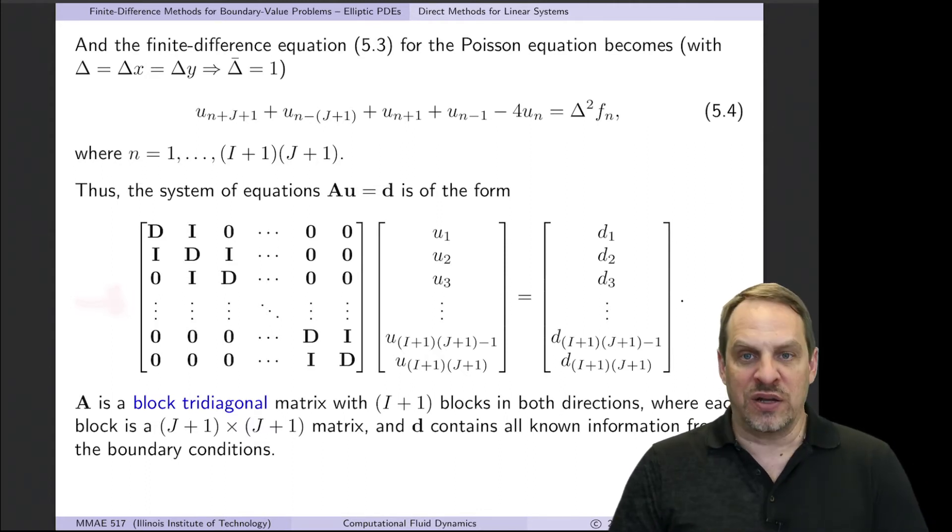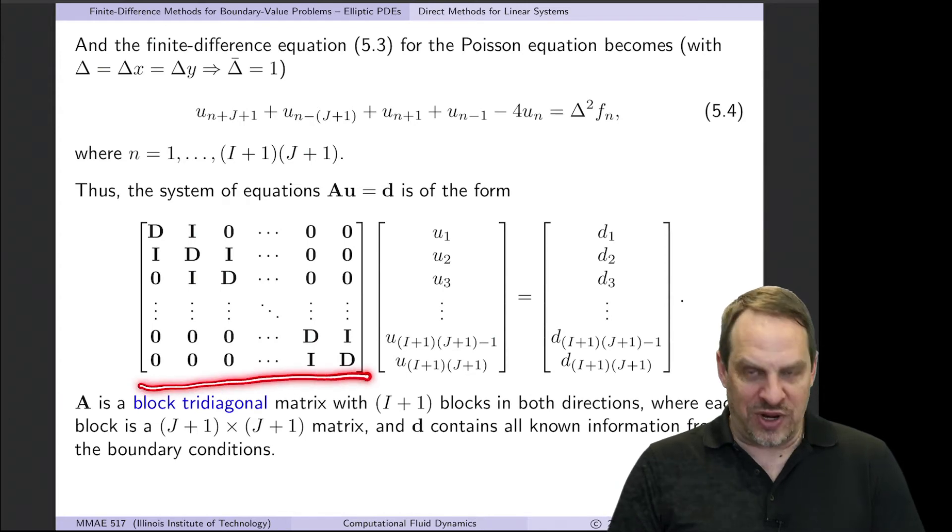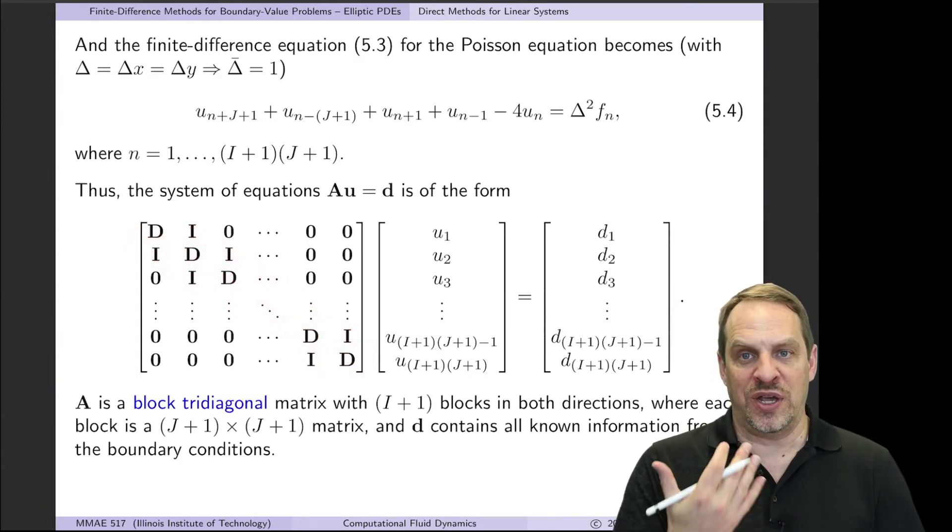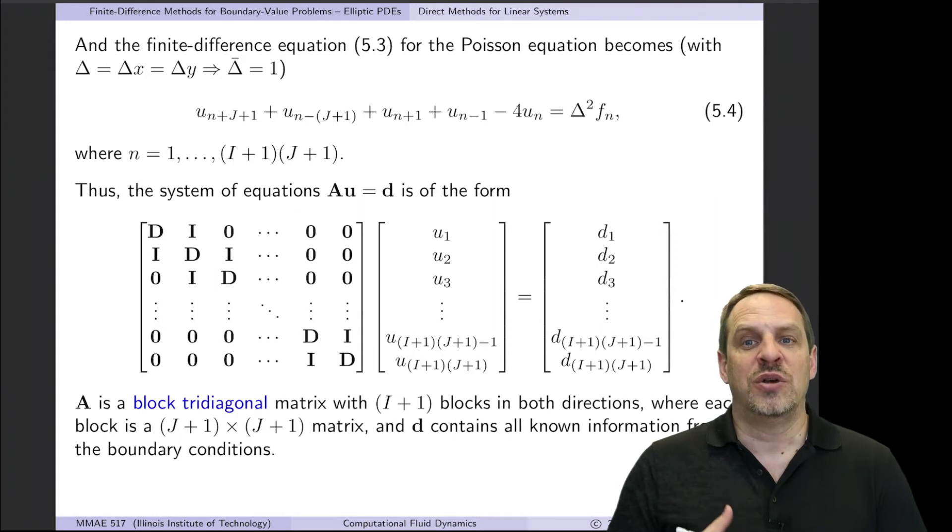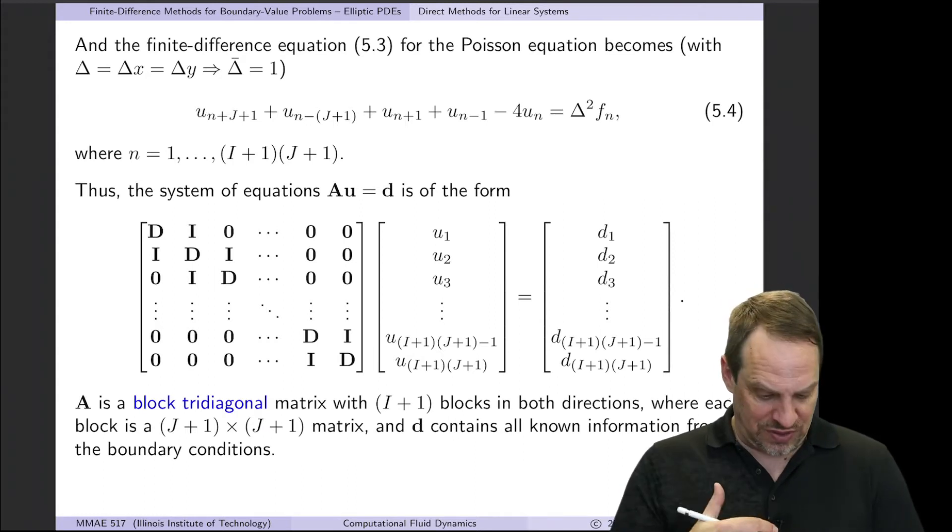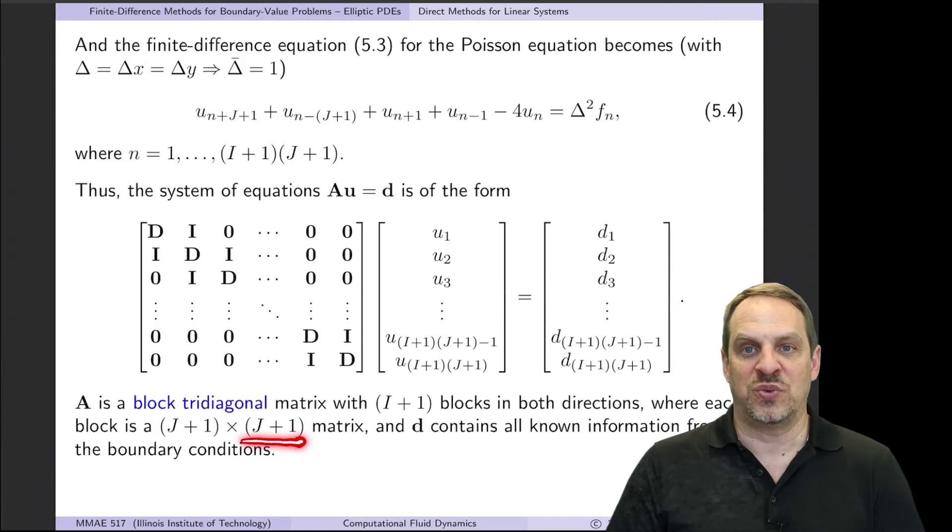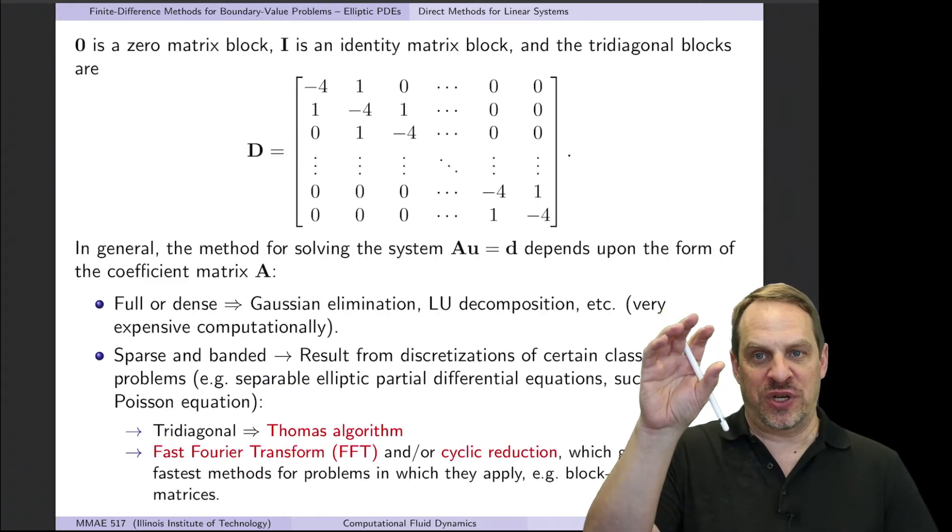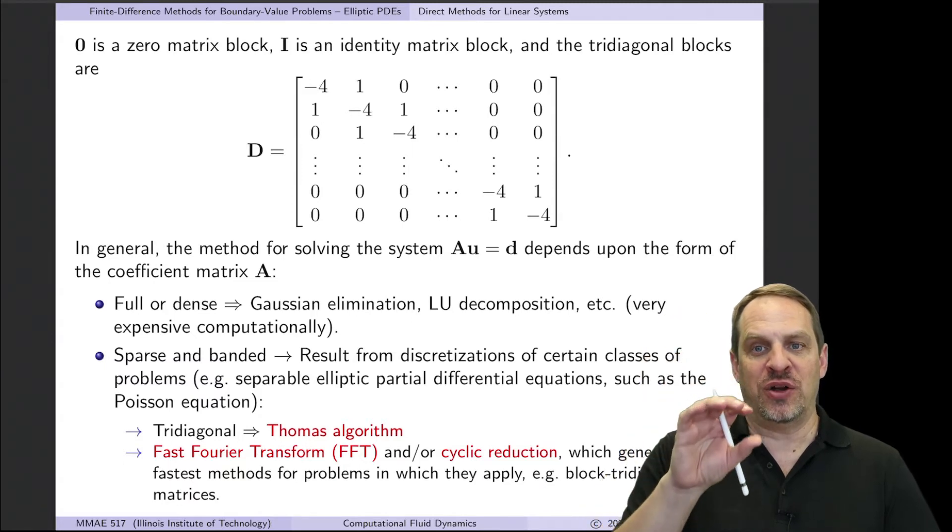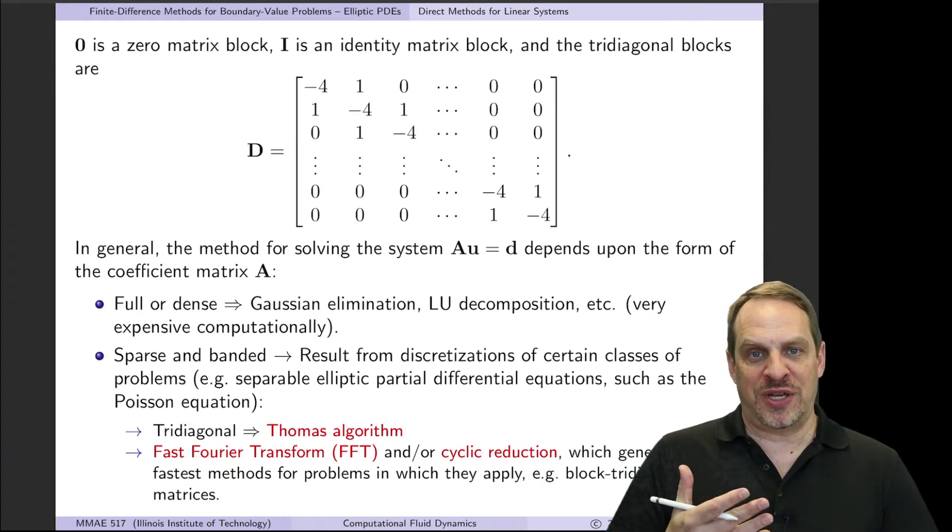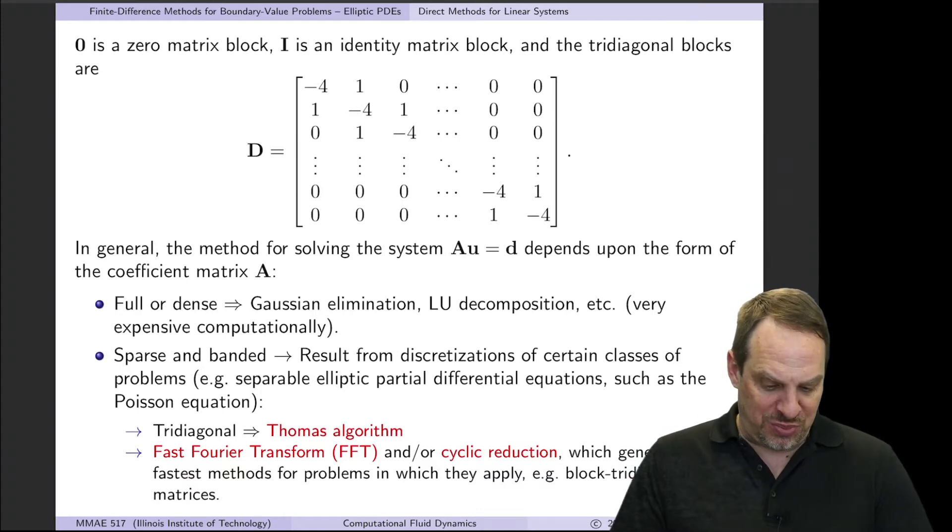These D blocks that go down the main diagonal of the block matrix have zeros here and here, and they're tridiagonal along the upper, main, and lower diagonals. Then the I's, the identity matrices, those pick up these coefficients, the 1 coefficients for these two terms. But you'll notice they're offset by capital J plus 1 below and above. So that's where these identity matrices come in. If you were to write out this entire A matrix, you'd have minus 4's down the diagonal, 1's down the upper, 1's down the lower diagonal, then a whole bunch of zeros above and below, and then another set of 1's. We call those fringes. So that's what the matrix would look like in block form.